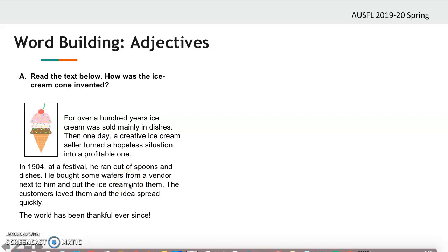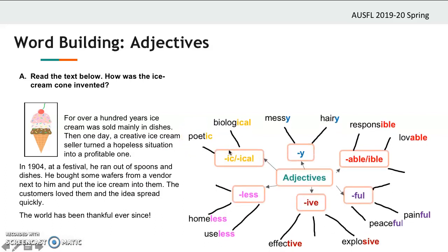Now we'll come back to this text for some adjective hunting, but first let's have a look at adjective suffixes. Here we have some adjective suffixes: -y, -able, -ful, -ive, -less, -ic. These suffixes come at the end of words and they form an adjective.